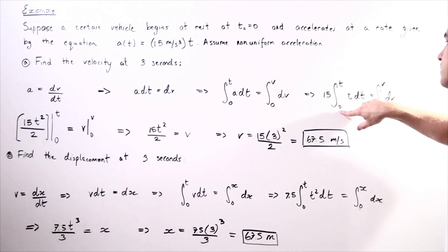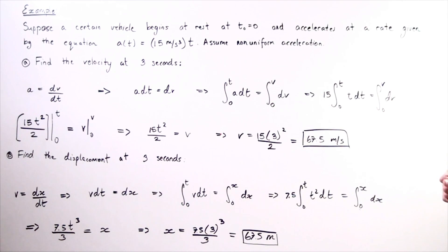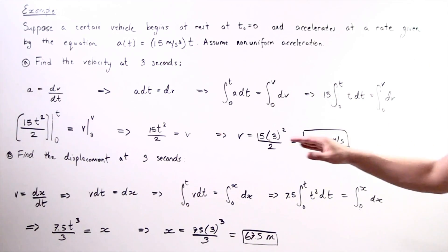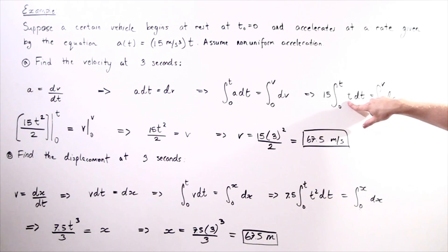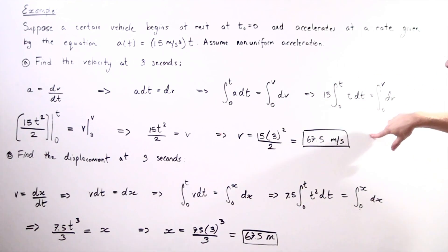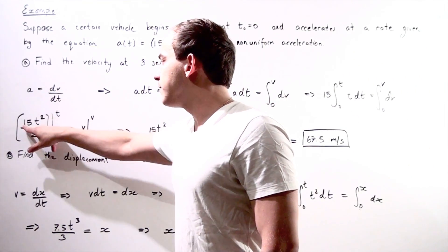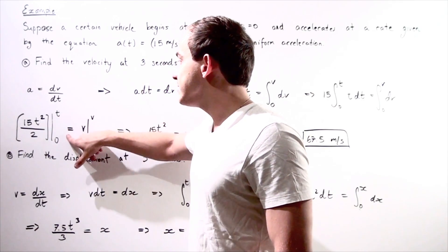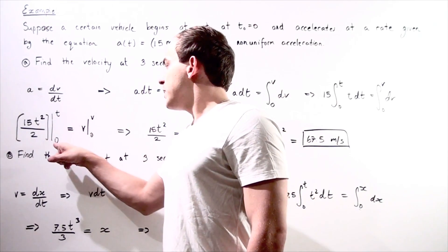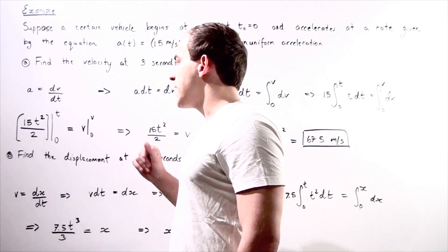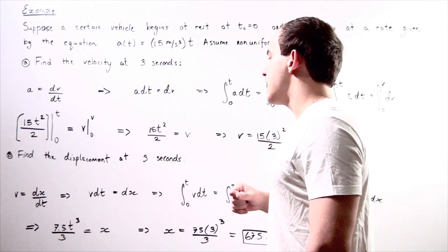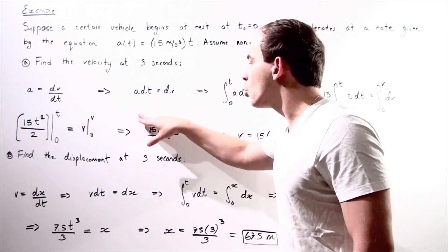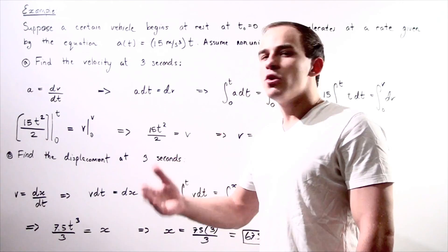So we have 15 times the integral from zero to t of t dt, equal to the integral from zero to v of dv. The right side becomes v evaluated from zero to v. The left side becomes 15 times t squared divided by 2, evaluated from zero to t. Because we have zeros on the bottom, both terms cancel, and we're left with 15t squared divided by 2 equals v, or 7.5t squared equals v.